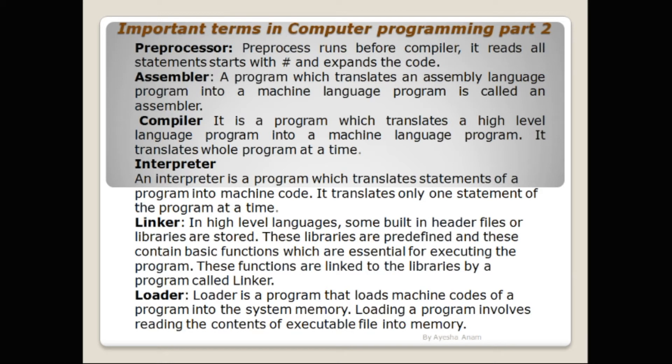The next type of program is interpreter. An interpreter is a program which translates the statements of a program into machine code. It translates only one statement of a program at a time. It reads one statement, translates it and executes it, then goes to the next statement, reads it, translates it, and executes it.